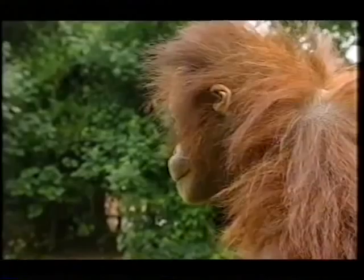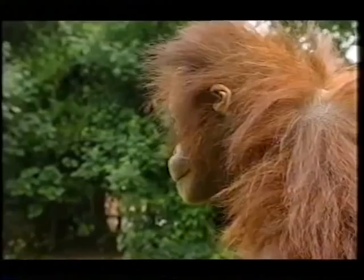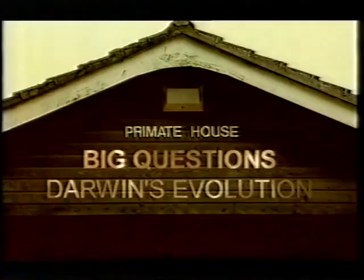The idea that species can develop and change has been causing arguments for over 200 years. The evolution of the human race has set off the fiercest arguments of all. An English scientist called Charles Darwin started the great debate on the origin of species. But what led him to come up with such a revolutionary idea?